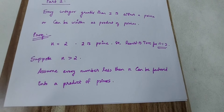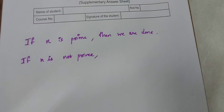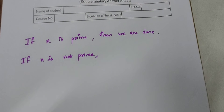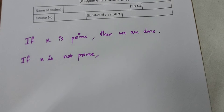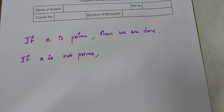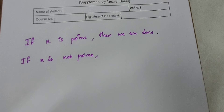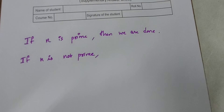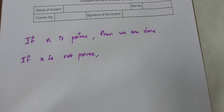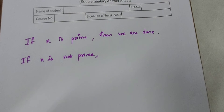Now suppose n is greater than 2. We will assume that the statement holds true for all integers less than n, and let's consider the number n. If n is a prime number, then we are done, because the statement says any number greater than 1 is either a prime number or can be written as a product of primes. So if n is prime, we are done.